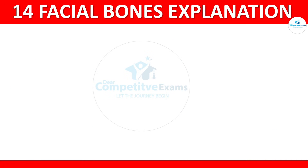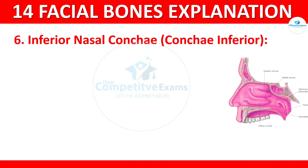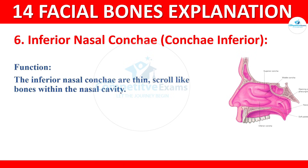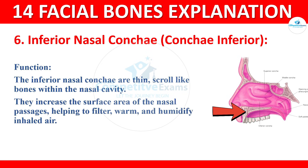The next bone is inferior nasal conchae. The inferior nasal conchae are thin, scroll-like bones within the nasal cavity. They increase the surface area of the nasal passages and help to filter, warm, and humidify inhaled air.